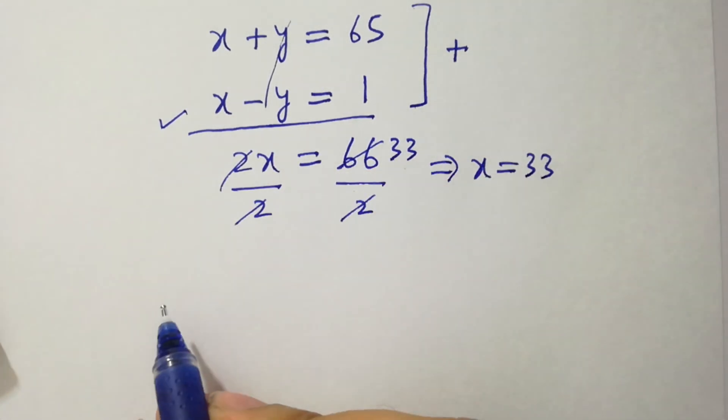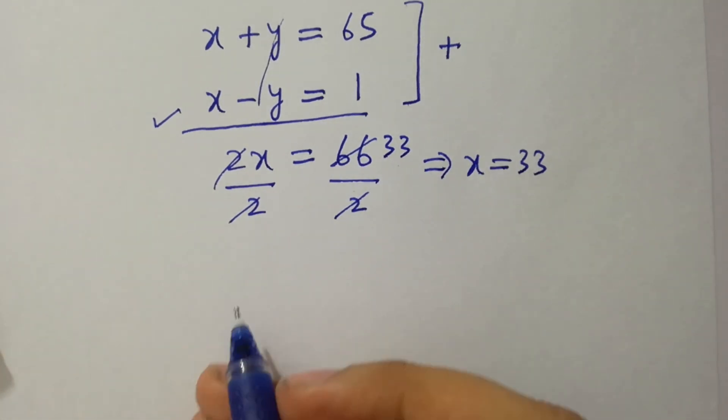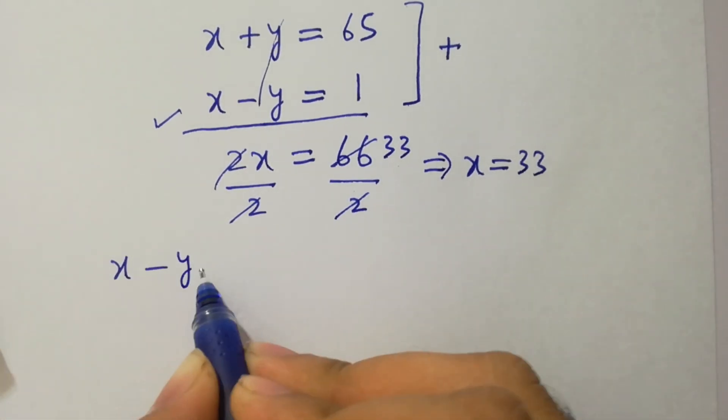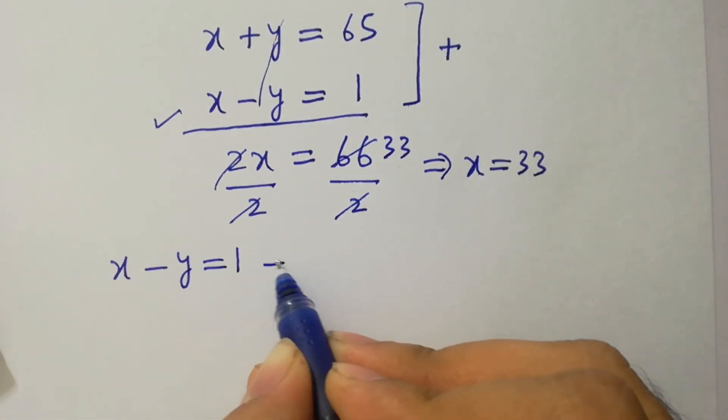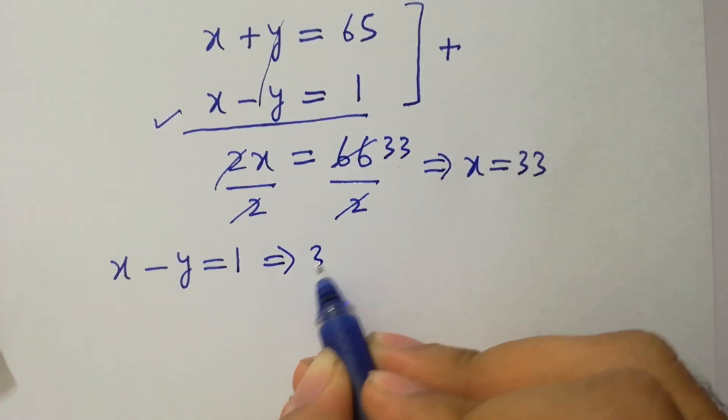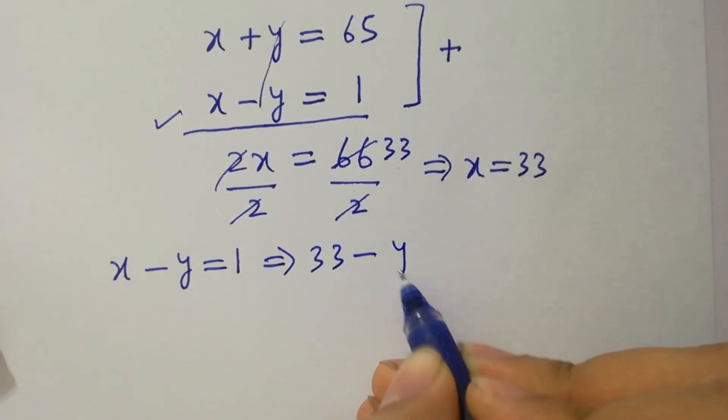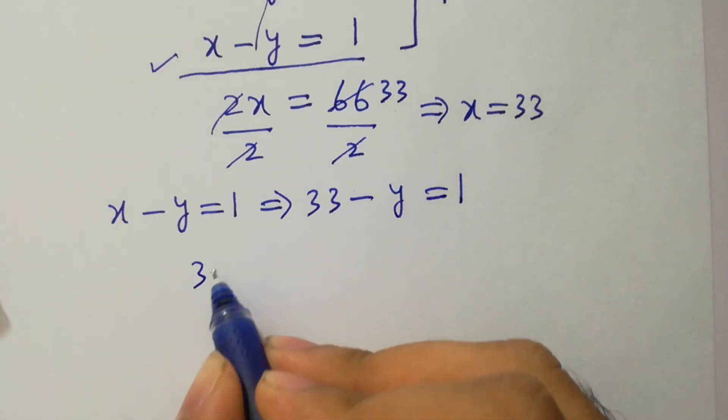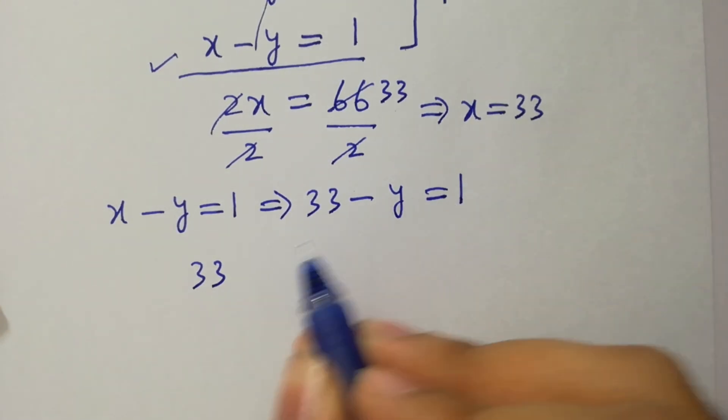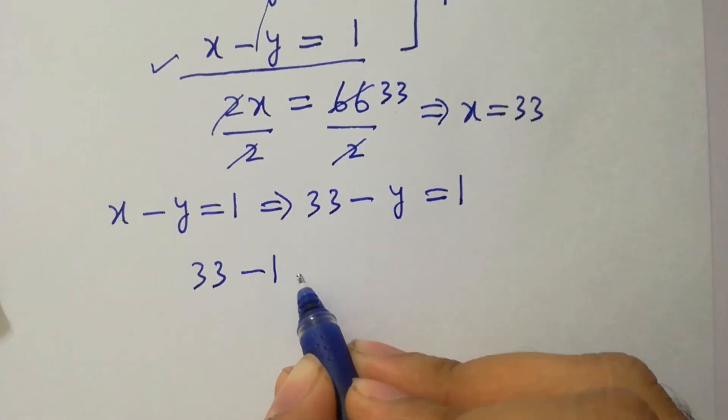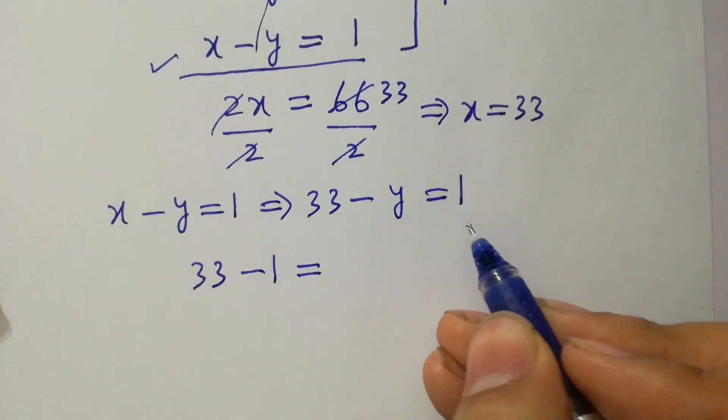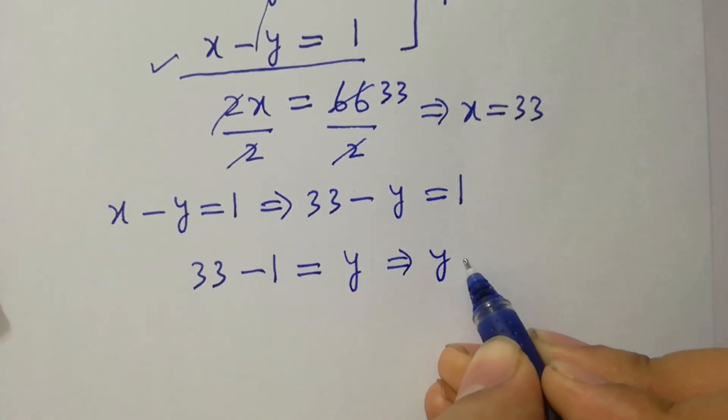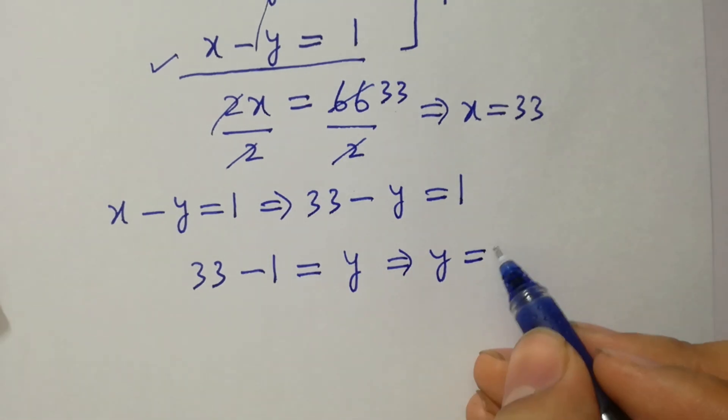Put this into this equation to find the value of y. x minus y equal to 1. 33 minus y equal to 1. 33 plus 1 or left hand side will be minus 1 equal to minus y or right hand side will be plus y.